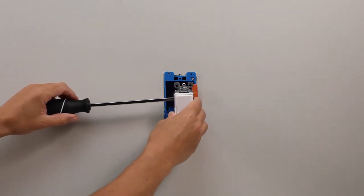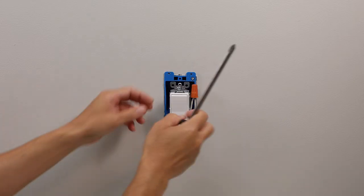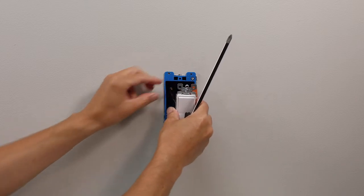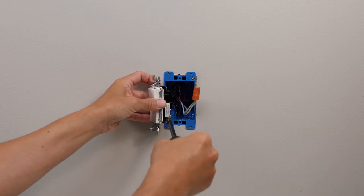First, you need to disconnect the line and load wires. These are usually black from the existing switch. Then disconnect the green or bare copper ground wire from the wires in the wall.